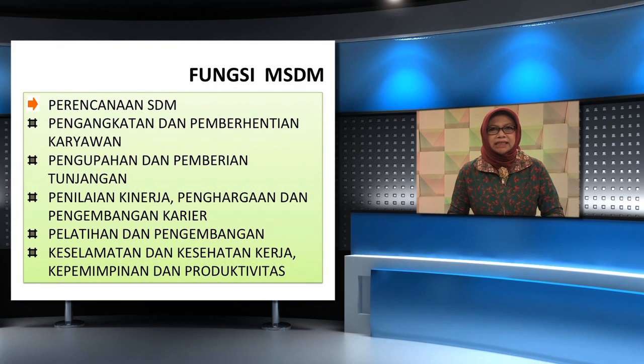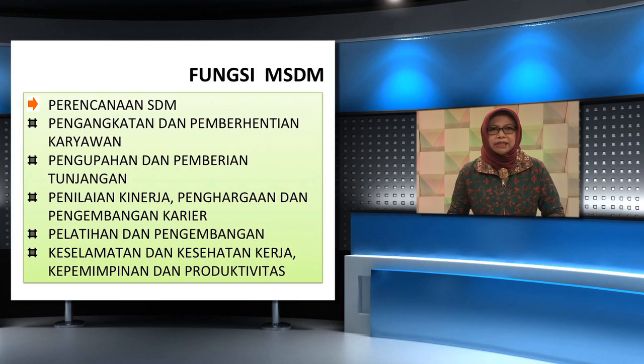Fungsi manajemen sumber daya manusia yang pertama: perencanaan sumber daya manusia. Aktivitas utama perencanaan sumber daya manusia meliputi: A. Penyelenggaraan analisis jabatan dan desain pekerjaan yang digunakan untuk menentukan persyaratan khusus dari jabatan individu di dalam organisasi. B. Memperkirakan kebutuhan sumber daya manusia yang diperlukan organisasi untuk mencapai tujuannya. C. Mengembangkan dan mengimplementasikan rencana untuk memenuhi kedua kebutuhan di atas.